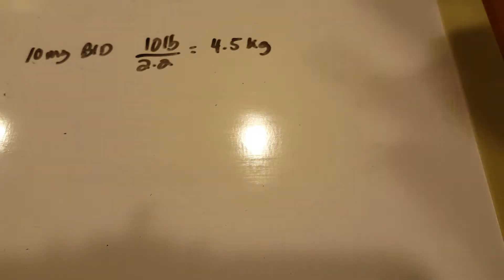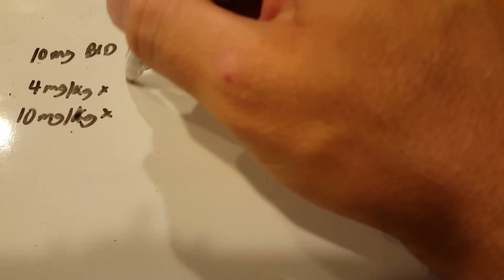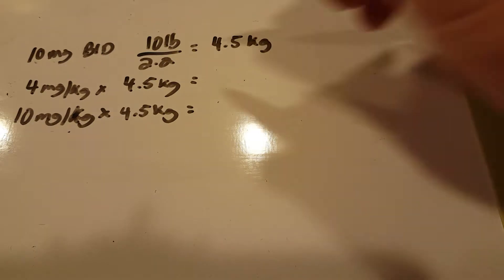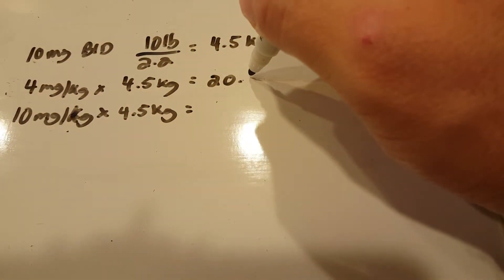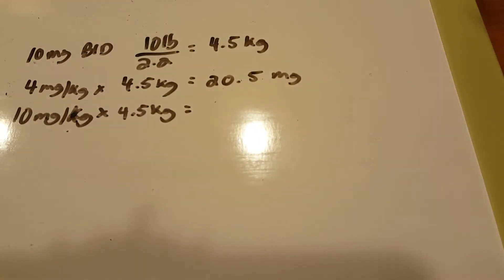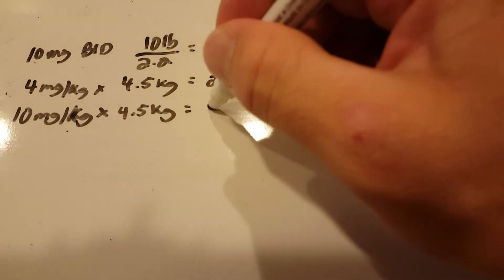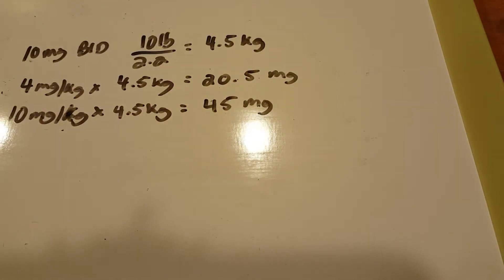I want to know if it fits within the dosage range of 4 to 10 milligram per kilogram, and I'm going to multiply by the patient's weight. So 4 times 4.5 is 20.5 milligrams, and 10 times 4.5 is 45 milligrams.